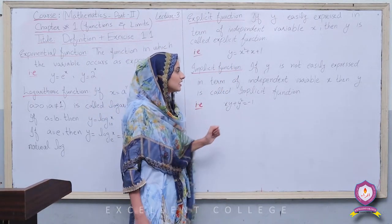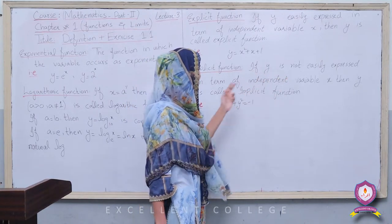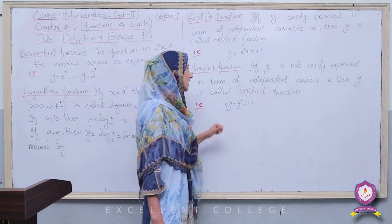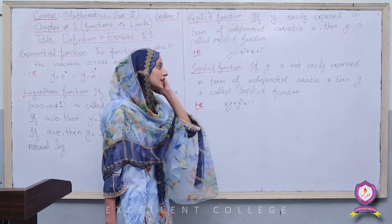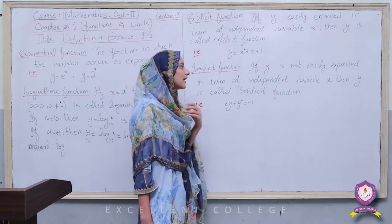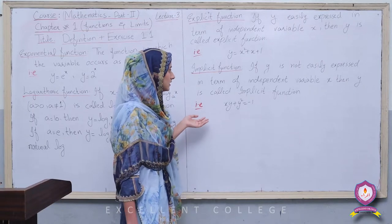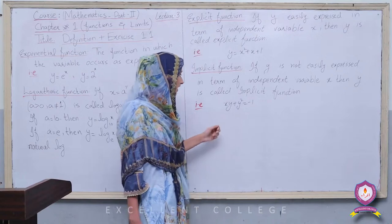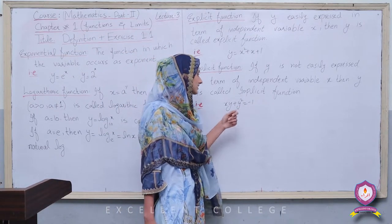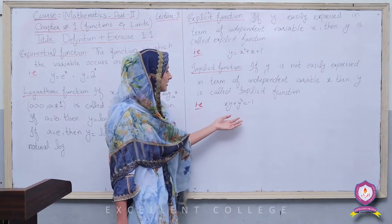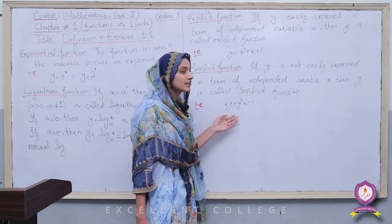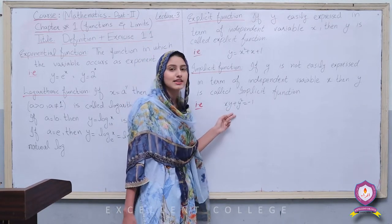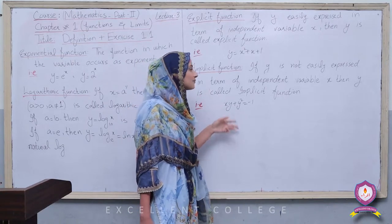Next is Implicit Function. If y is not easily expressed in terms of the independent variable x, then y is called an Implicit Function. For example, xy + y = -1. This is a complex type — it will be difficult to express y easily, so this type of function is called an Implicit Function.